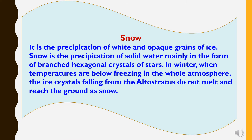Snow is the precipitation of white and opaque grains of ice, mainly in the form of branched hexagonal crystals or stars. In winter, when temperatures are below freezing in the cold atmosphere, ice crystals falling from the altostratus do not melt and reach the ground as snow.